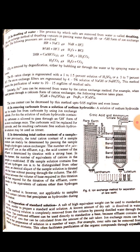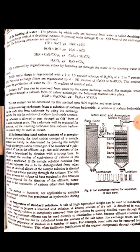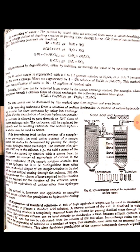Next application is in determination of total cation content of a sample. The total cation content of a sample solution can be determined by passing the sample through a hydrogen cation exchanger. The number of equivalents of hydrogen ion in the effluent, for example the acid content of the effluent, is determined by titration with a strong base. In this manner, the number of equivalents of cations in the sample is established.